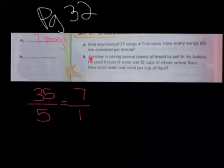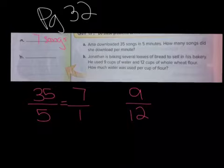Number two. Jonathan is baking several loaves of bread to sell at his bakery. He used nine cups of water and 12 cups of whole wheat flour. How much water was used per cup of flour? Nine cups of water and 12 cups of whole wheat flour. So there is our ratio right there.